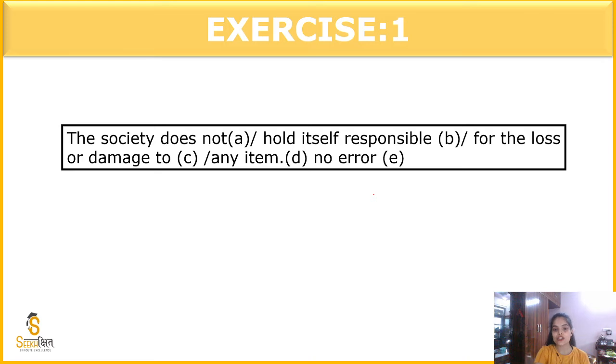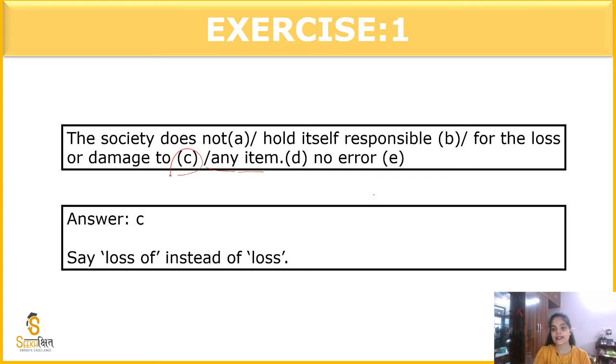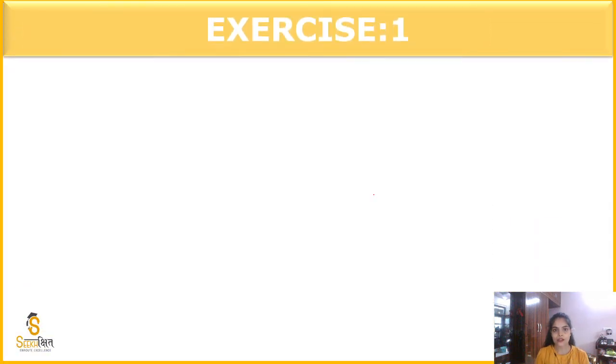the society does not hold itself responsible for the loss or damage to any item. Where is the error? Error is in the part C. As, loss - where is it happening? Loss is written. Here we also have to put 'of'. Loss is happening of something. Of our property. The society does not hold itself responsible for the loss of or damage to any item.